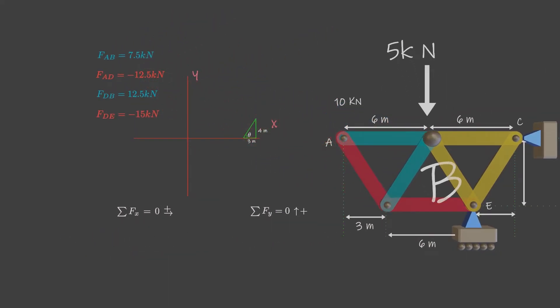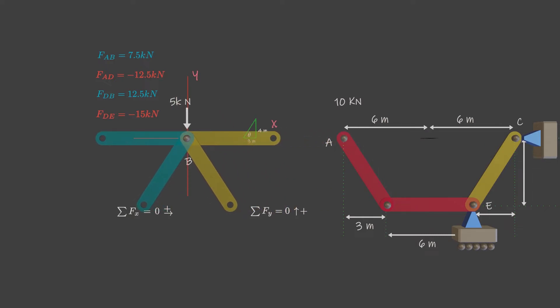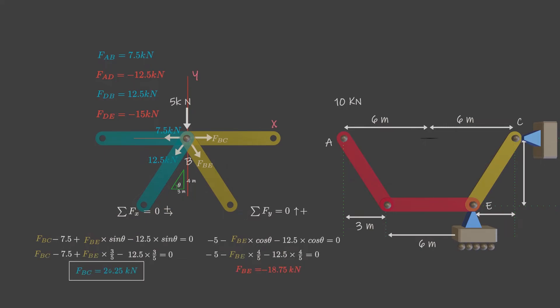Again, at joint B, arbitrarily assume that both unknown forces act away from the joint. The positive value obtained for member BC indicates that this assumption is correct. Member BC is in tension. The negative value of member BE indicates that the second assumption is wrong. Member BE is in compression.